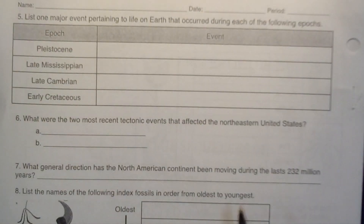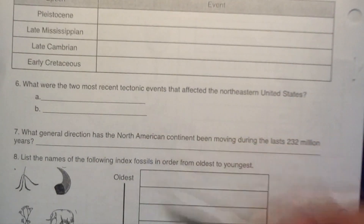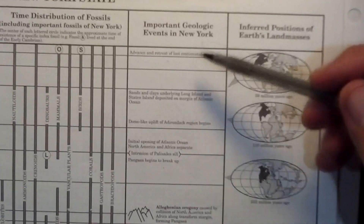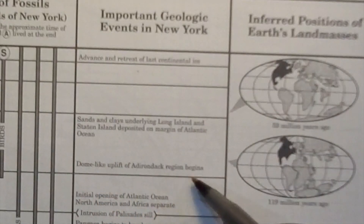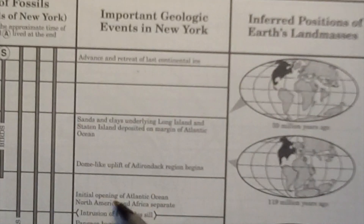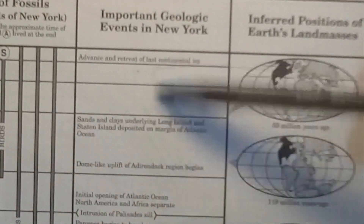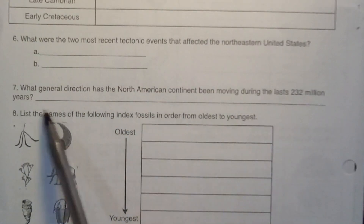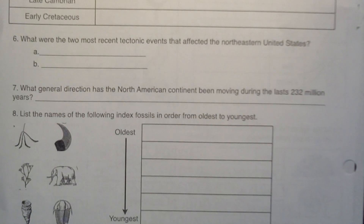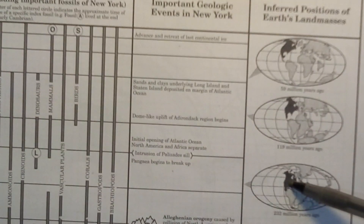Question number six: what were the two most recent tectonic events that affected the Northeastern United States? Tectonic events involve plates. The answers are: dome-like uplift of the Adirondack regions begins, and the initial opening of the Atlantic Ocean — North America and Africa separate — as the most recent tectonic events. North America was here and has moved to the north and to the west over the past 232 million years.